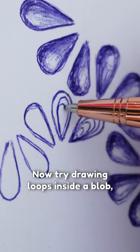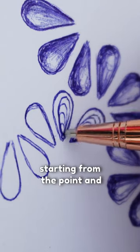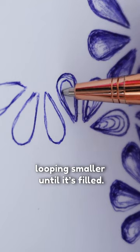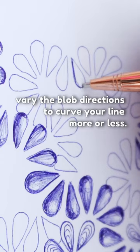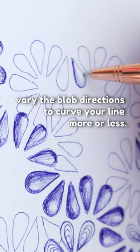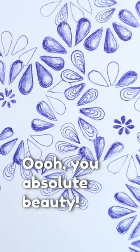Now try drawing loops inside a blob, starting from the point and looping smaller until it's filled. It's kind of like a shell, no? Play with any other patterns you like and vary the blob directions to curve your line more or less. Oh you absolute beauty.